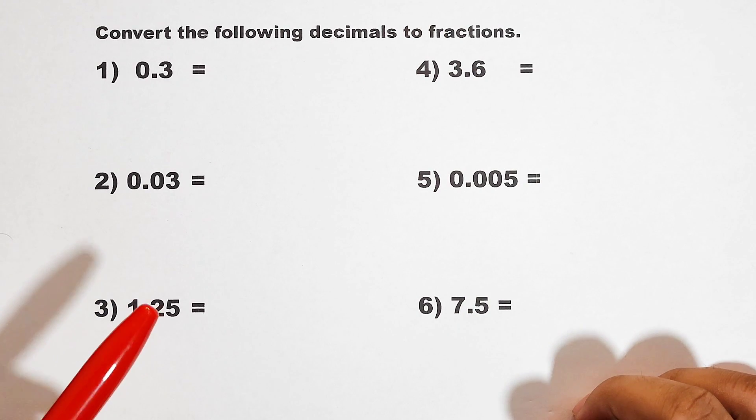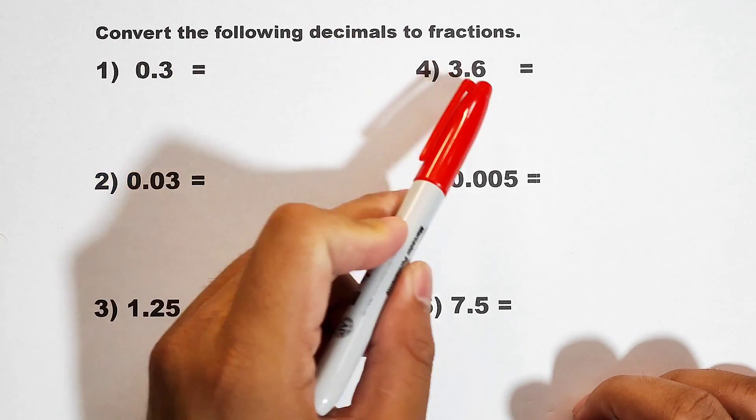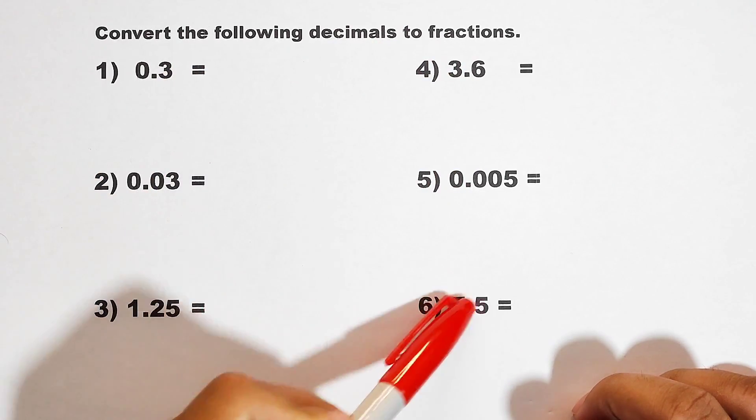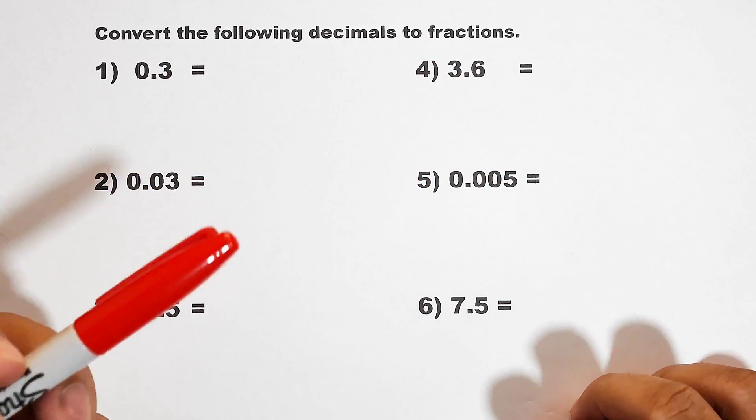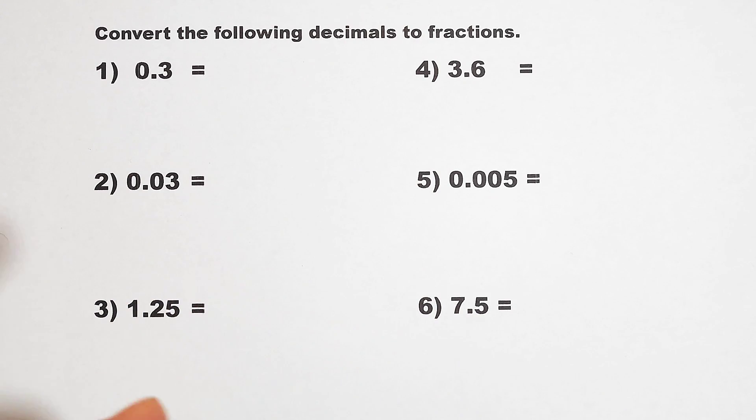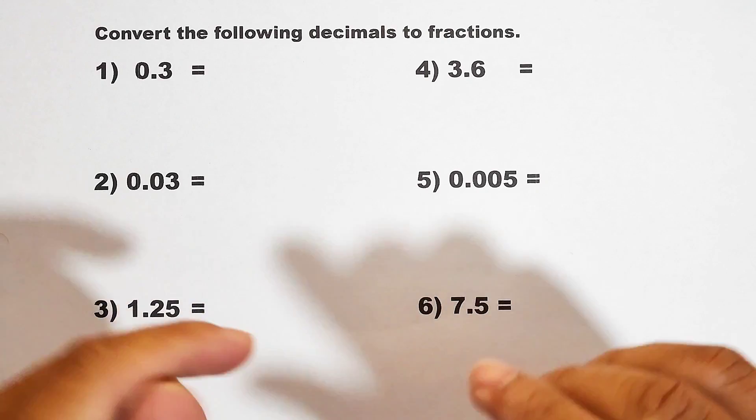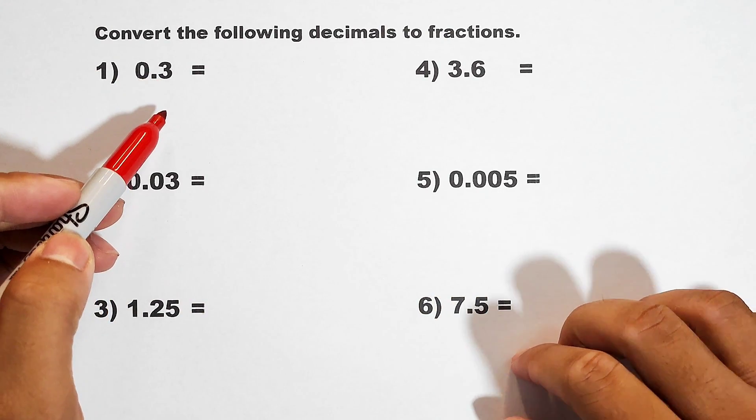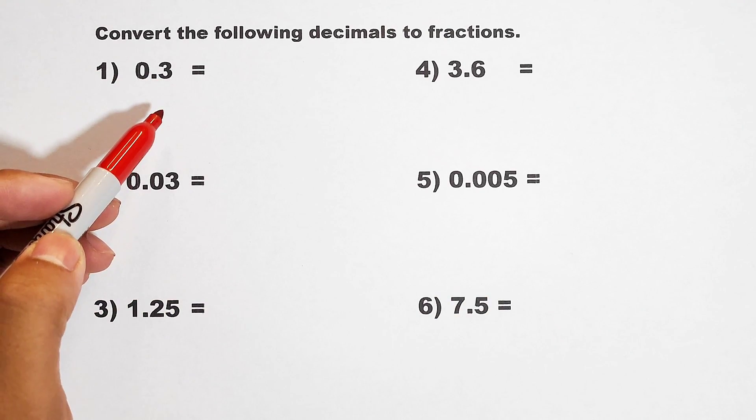As you can see, we are asked here to convert the following decimals to fractions. We have 6 decimals, and our target here is to convert this into its fractional form. Let's start with number 1. We are given 0.3. So how are we going to convert this into decimal?